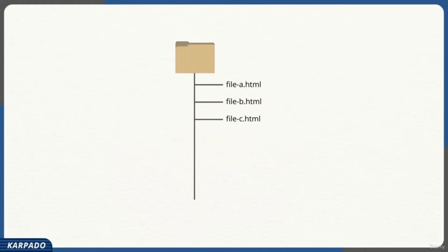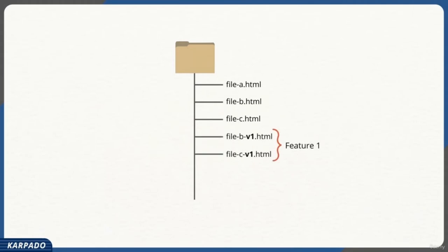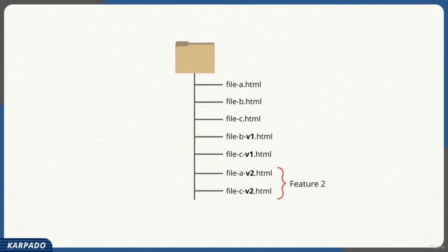Assume you have a project with all these files — they could be HTML, image, CSS, JavaScript, Java files, etc. If Sundar is introducing a new feature affecting file B and file C, instead of copying the entire folder, he makes a copy of only those two files, introduces the code for feature one. If another feature requires changes in file A and file C, he makes a copy of the latest versions of file A and file C version 1, then introduces the new feature.